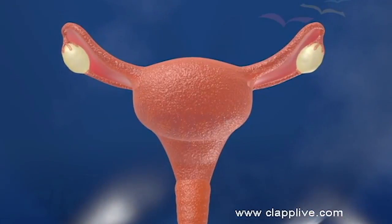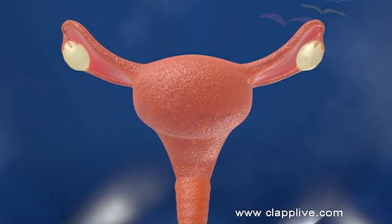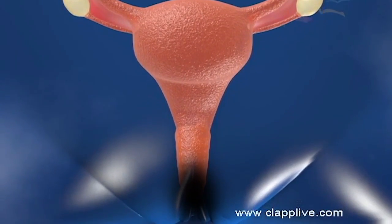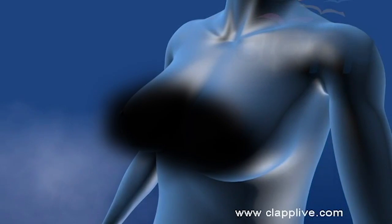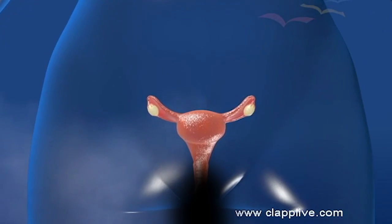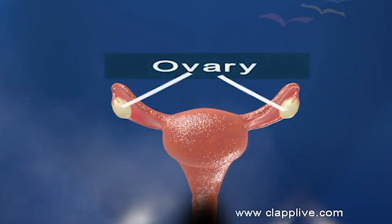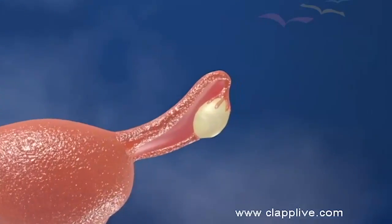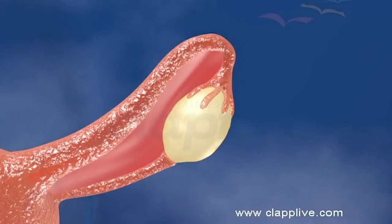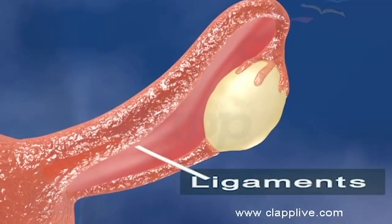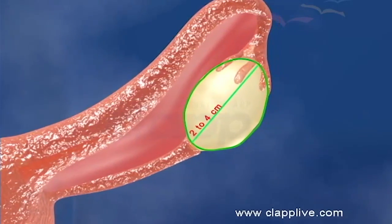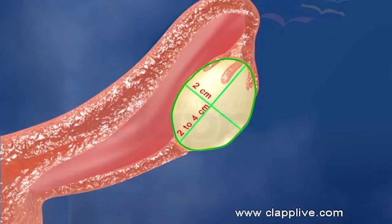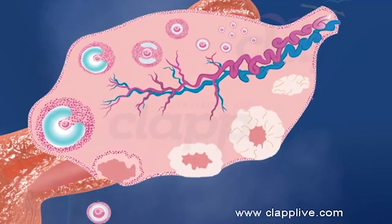The female reproductive system consists of a pair of ovaries, a pair of oviducts or fallopian tubes, a uterus, a vagina, external genitalia, and a pair of mammary glands. Ovaries are the primary sex organs of the female. They are solid structures located in the lower part of the abdomen, connected by ligaments to the uterus and the lateral pelvic wall.